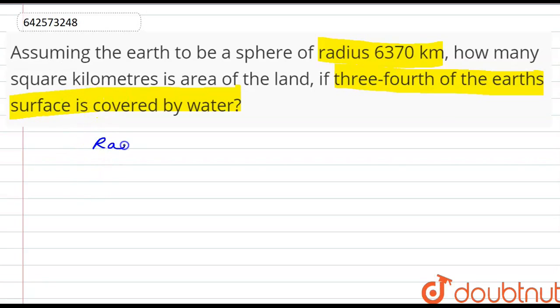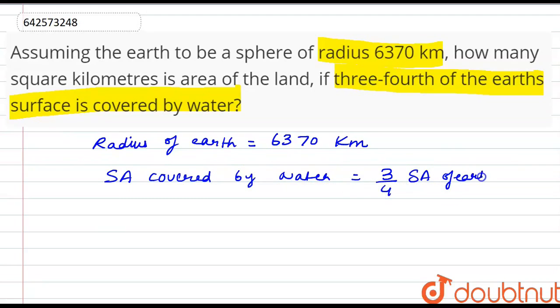The radius of Earth is 6370 kilometers, and the surface area covered by water is three-fourths the surface area of Earth.